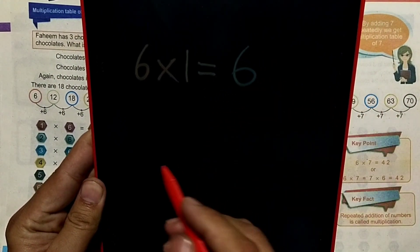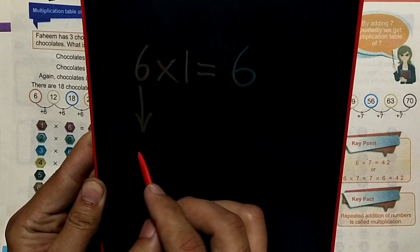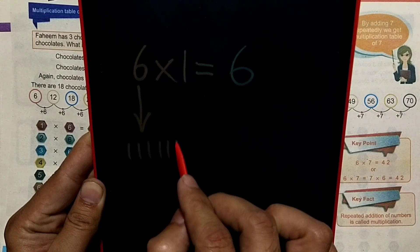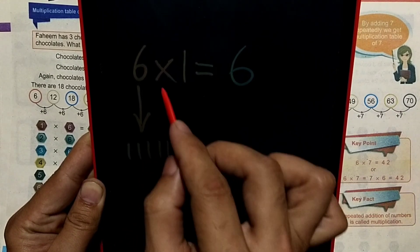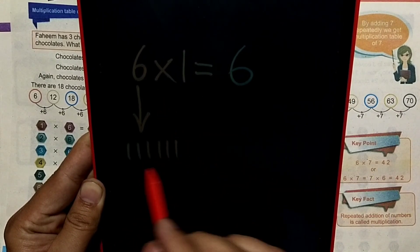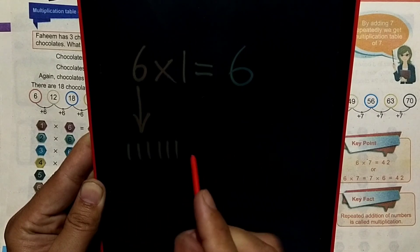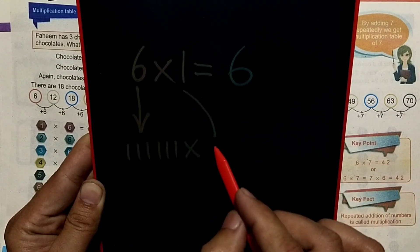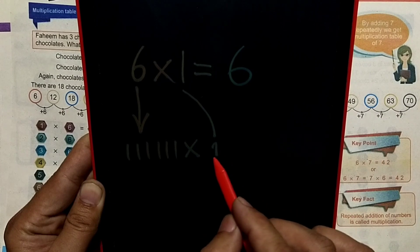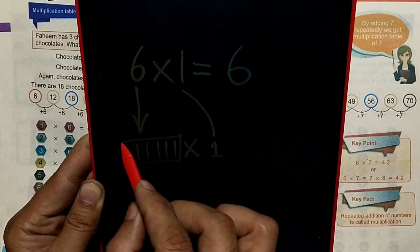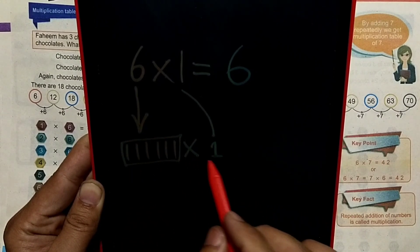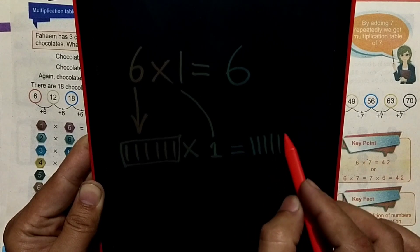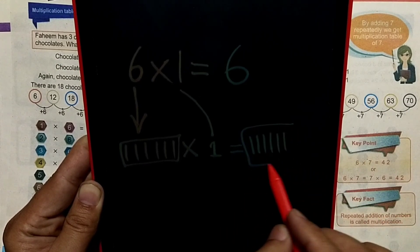This is the number 6. This is the number 6. 1, 2, 3, 4, 5, 6. 1 is equal to 1. Okay?